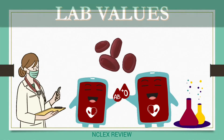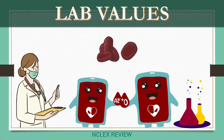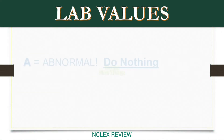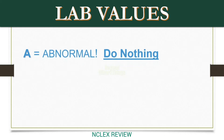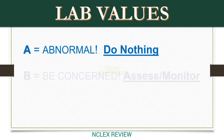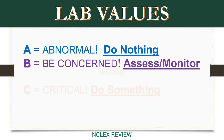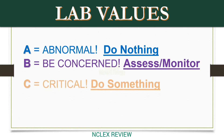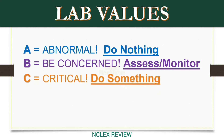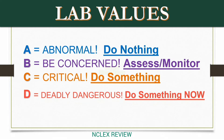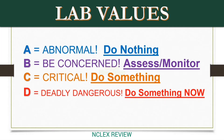Lab Values. A equals abnormal — do nothing. B equals be concerned — assess or monitor. C equals critical — do something. D equals deadly dangerous — do something now. The ABCD framework you should know when it comes to lab values, with corresponding colors you should remember for your NCLEX exam.